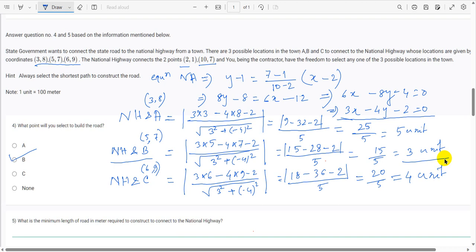And the next question is what is the minimum length of road in meter required to construct to connect the national highway? Here we will get 3 units as the distance, as the shortest distance. And here is a note: 1 unit is equal to 100 meter. So the minimum length is 3 into 100 that is 300 meter.